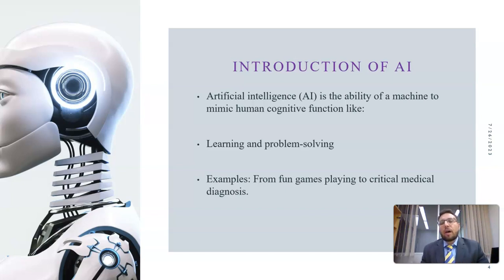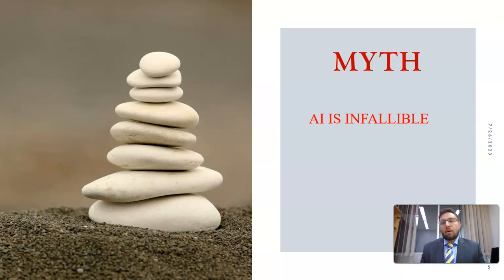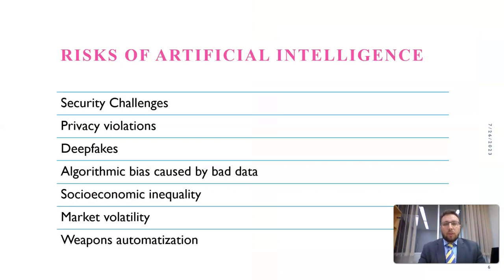The examples range from fun games to critical medical diagnosis. Now there is a popular myth that AI is infallible, which is absolutely wrong, because humans make mistakes and so does AI. We can infer that AI is not infallible.